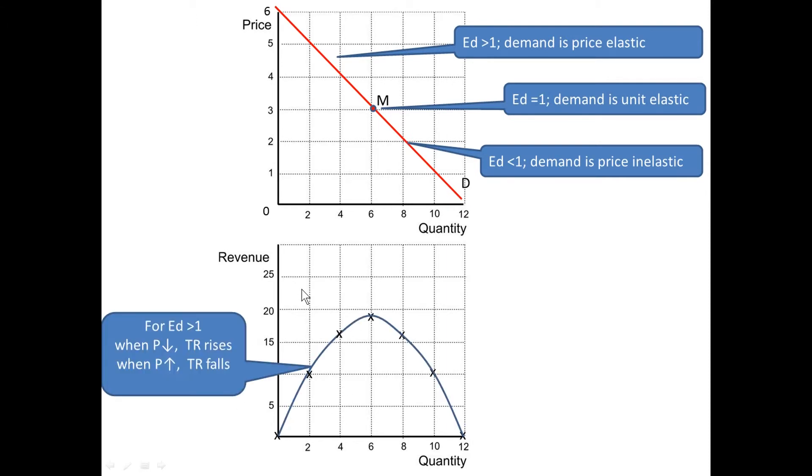We show that when the elasticity of demand is greater than 1, it was to the points left of M. When the price goes down, then total revenue rises. The slope goes up. However, if the price were to go up from the midpoint, then revenue would, in fact, fall.